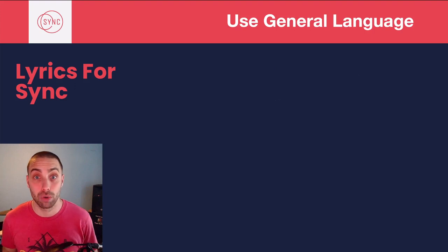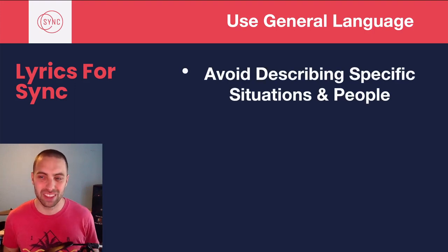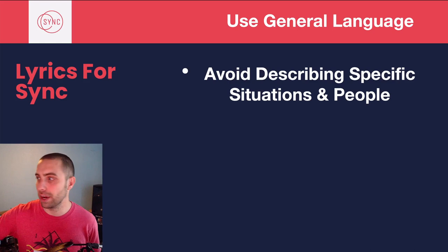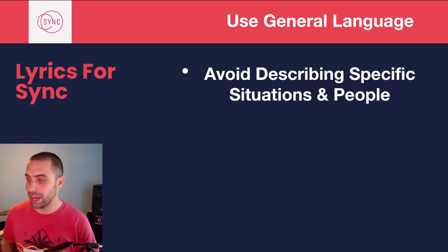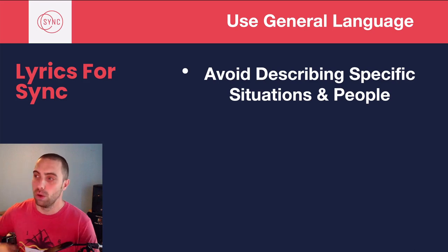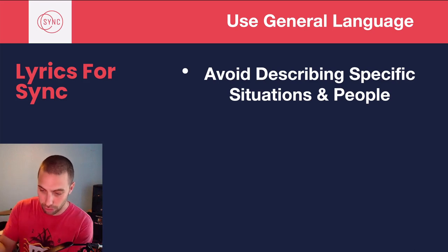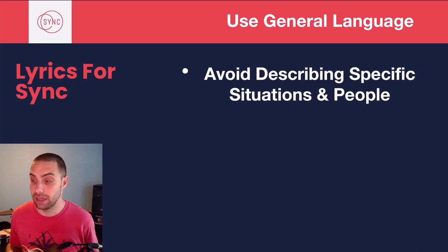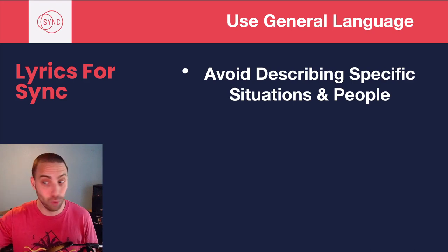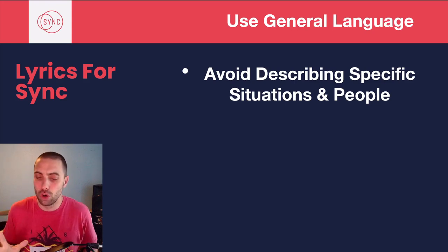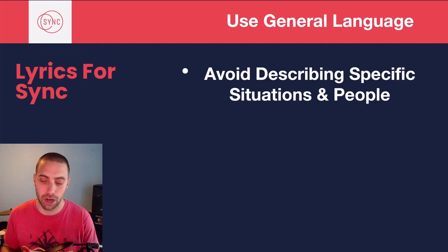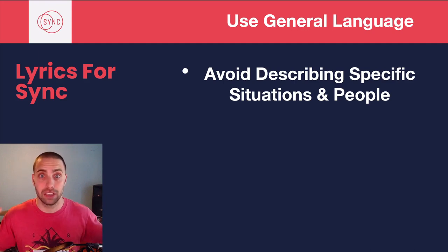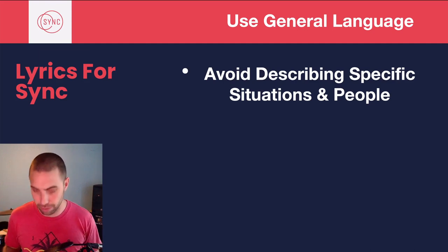So let's first talk about the general language you need to use. You want to avoid describing specific situations and people. You don't want to talk about a particular person wearing a particular article of clothing, walking down a particular street name. If you say 'the man wearing the suit walking down Main Street,' how many commercials are going to have a man wearing a suit walking down a literal Main Street? A few, but not nearly as many as if you kept it more general — talking about a man on a purpose, trying to find his way in the world, or a man who just lost everything and is hopeless. You can zoom out on the specifics and tell the general story so that multiple clients can actually relate to what you're trying to tell.